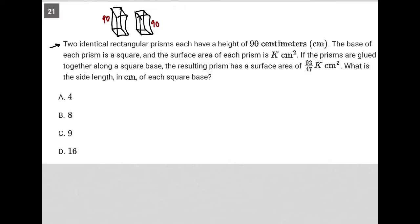The base of each prism is a square. We can see that, I'll just outline it in green. So technically top and bottom here are squares, and the surface area of each prism is k centimeters squared. So SA for surface area equals k, and just a small note, surface area means the area of all the surfaces, the sum of the area of all of the surfaces. If the prisms are glued together along a square base, the resulting prism has a surface area of 92 over 47 times k centimeters squared.